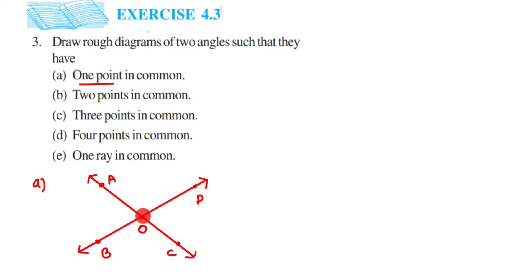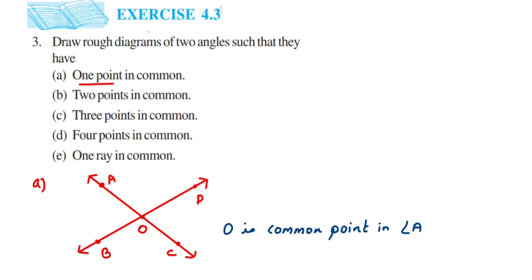I cannot take two adjacent angles side by side like BOA and AOD, because if I take two angles side by side there will be two points common — O and A. But they are asking for only one point. So the answer is angle AOB and angle COD, with O as the only common point.